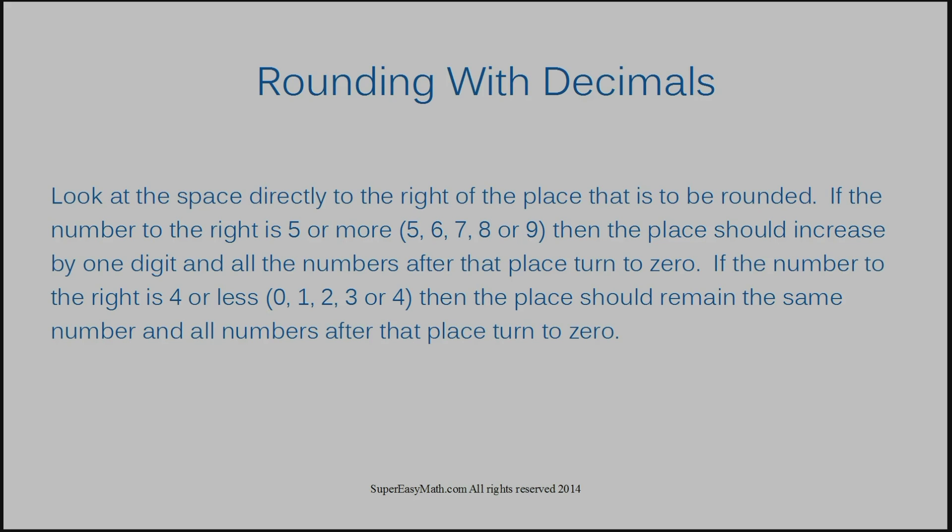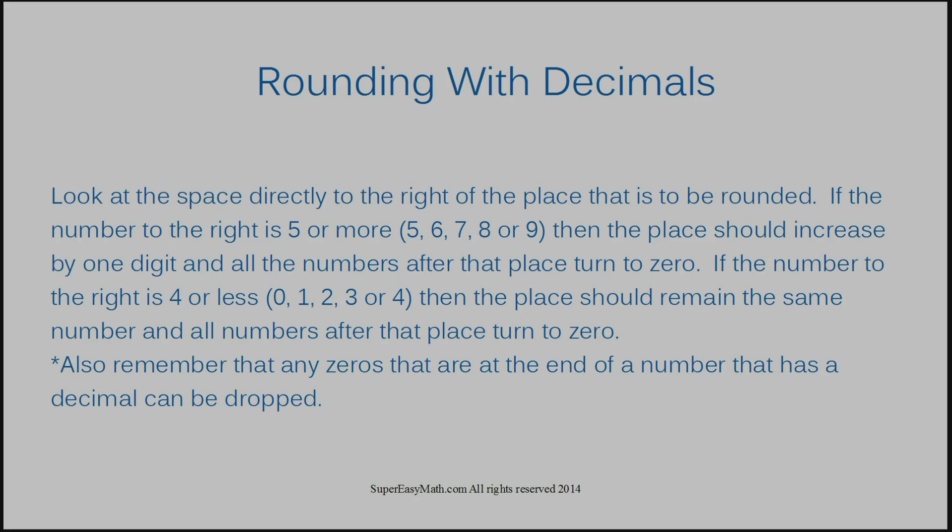If the number to the right is 4 or less — meaning 0, 1, 2, 3, or 4 — then the place should remain the same number and all numbers after that place turn to 0. Also, when you're dealing with decimals, you want to remember that any zeros that are at the end of a number that has a decimal can be dropped. I know all of that was a mouthful, so let me show you with some examples.